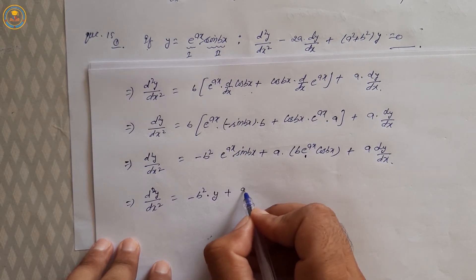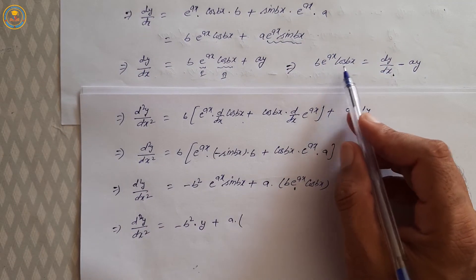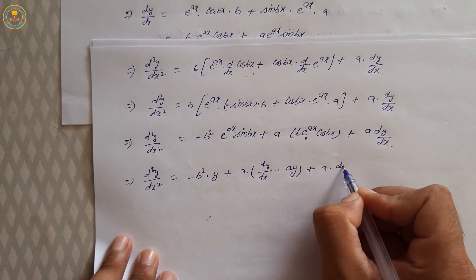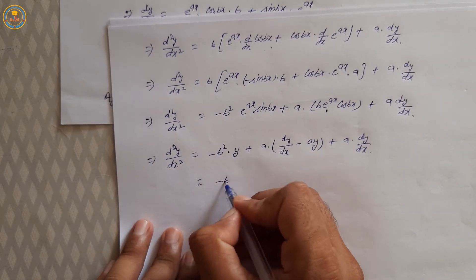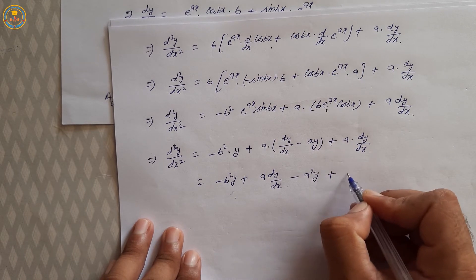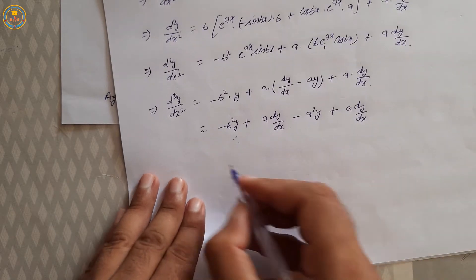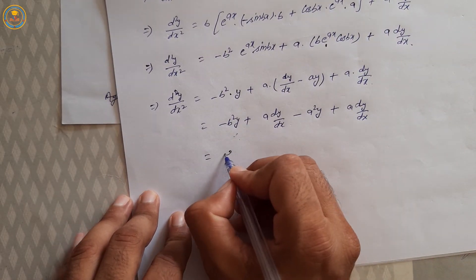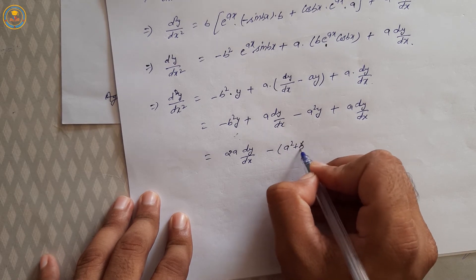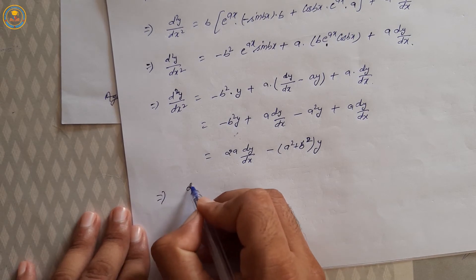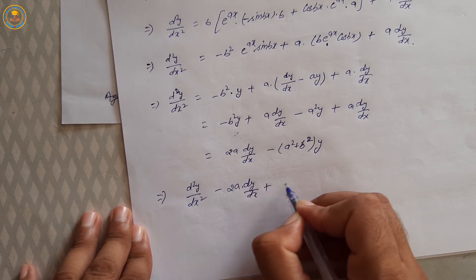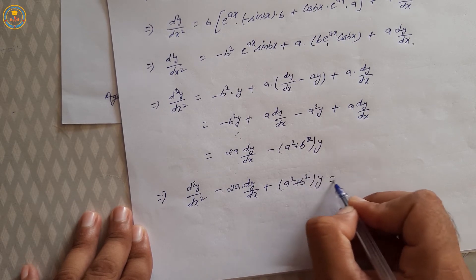It means y. So d²y/dx² = −b²·y + a·dy/dx − a²·y + a·dy/dx = 2a·dy/dx − (a² + b²)·y. This implies d²y/dx² − 2a·dy/dx + (a² + b²)·y = 0. Hence proved.